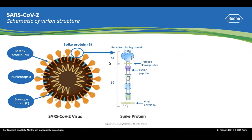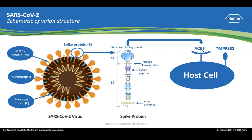The spike protein is trimeric. It has two subunits, S1 and S2. During viral infection, the receptor binding domain at the top of the S1 subunit latches onto the ACE2 receptor on the host cell surface. The host protease TMPRSS2 then cleaves the S1 subunit, exposing the fusion peptide on the S2 subunit, leading to the fusion of the viral lipid envelope with the host cell membrane, subsequently resulting in the viral particle entering into the host cell.